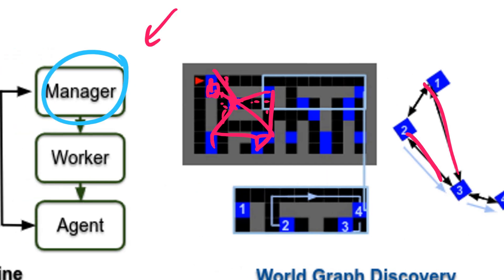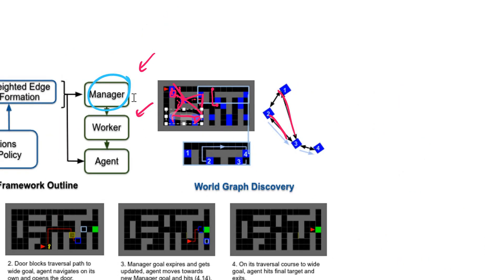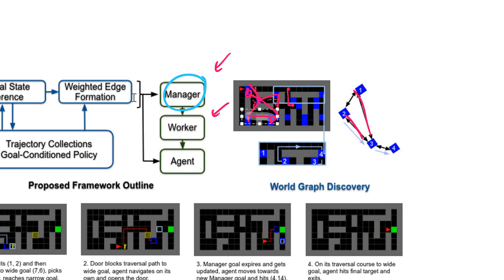So you can train the manager on that, and train the worker — as we said before — to simply select two close-by states and go from one to the other. In essence, that's how they do it. They show in the experiments that this basically transfers: if you pre-train like this, then you can give more specific and more complicated tasks, and this will rapidly accelerate learning. Look at the experiments if you have time. That was it for me, thank you for listening.